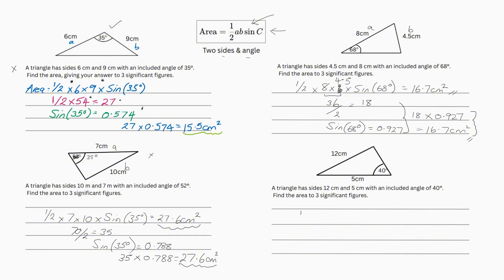And then finally, we have half times 12 times 5 times sin 40 degrees. And if you just put that into your calculator, the answer is going to be 19.3 centimeters squared.